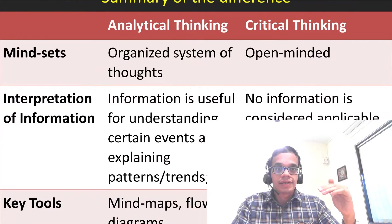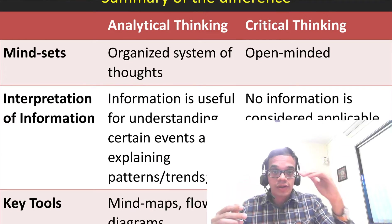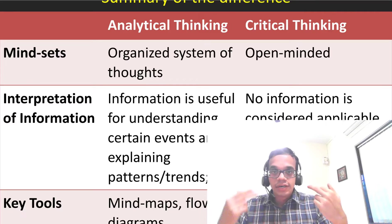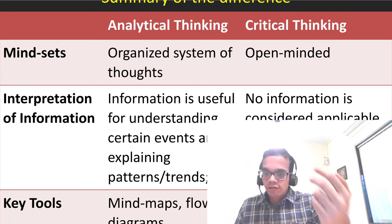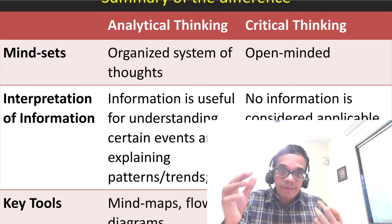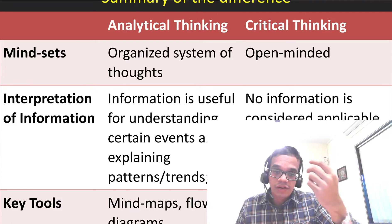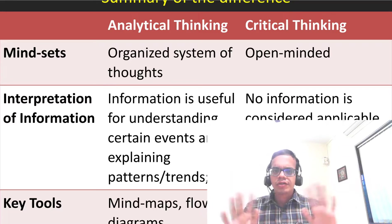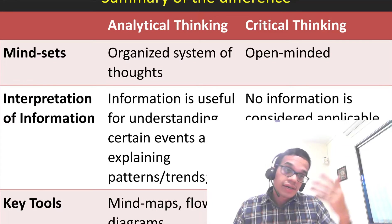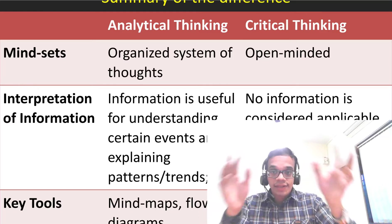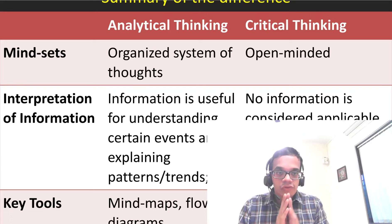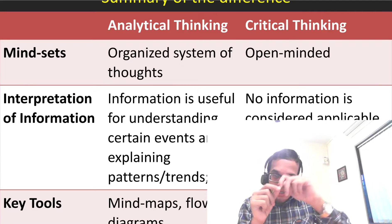Analytical thinking is an organized way of thought — data will come this way, data will be cleaned this way, data will be consolidated this way, and ultimately the information can be used and communicated. In contrast, critical thinking is open-minded with no fixed sequence — this can happen, or that can happen. In analytical thinking we try to stitch the scattered information together.